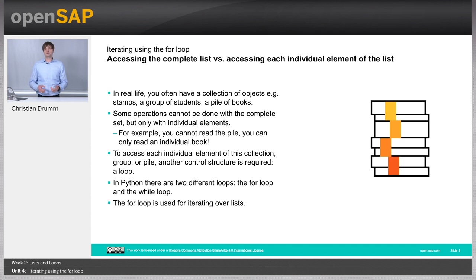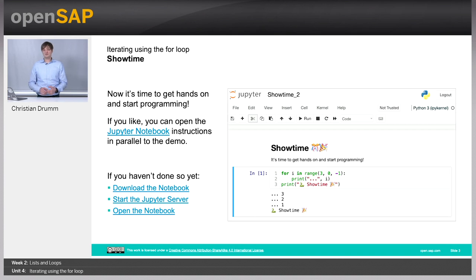In Python, we have two kinds of loops: the for loop and the while loop. In this unit, we will introduce you to the for loop. Let's head over to our Jupyter Notebooks and have a look at what the for loop looks like.